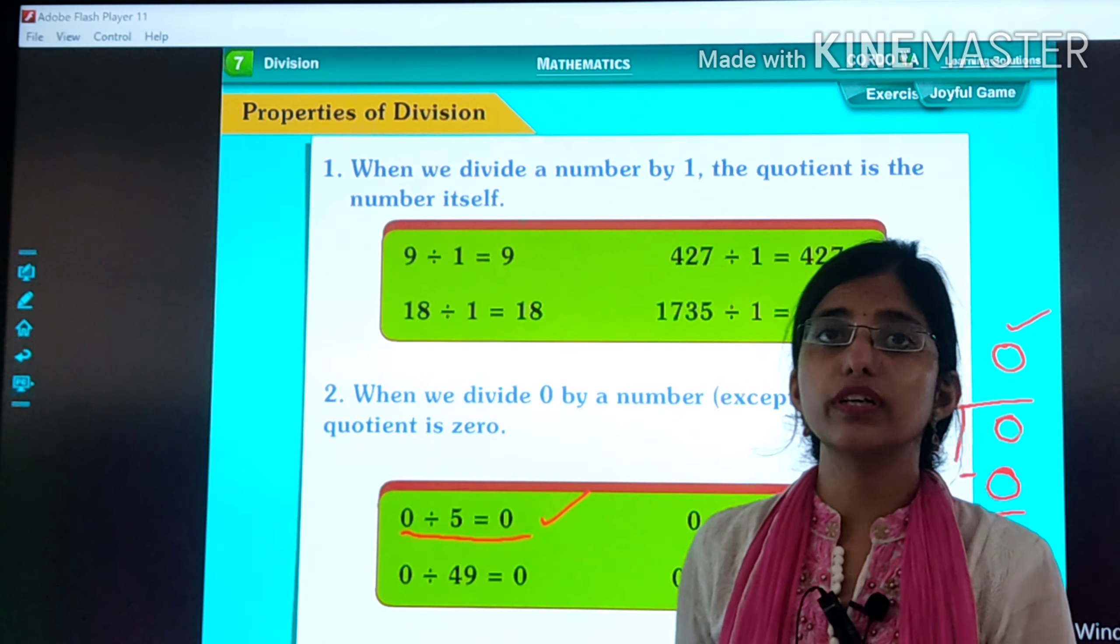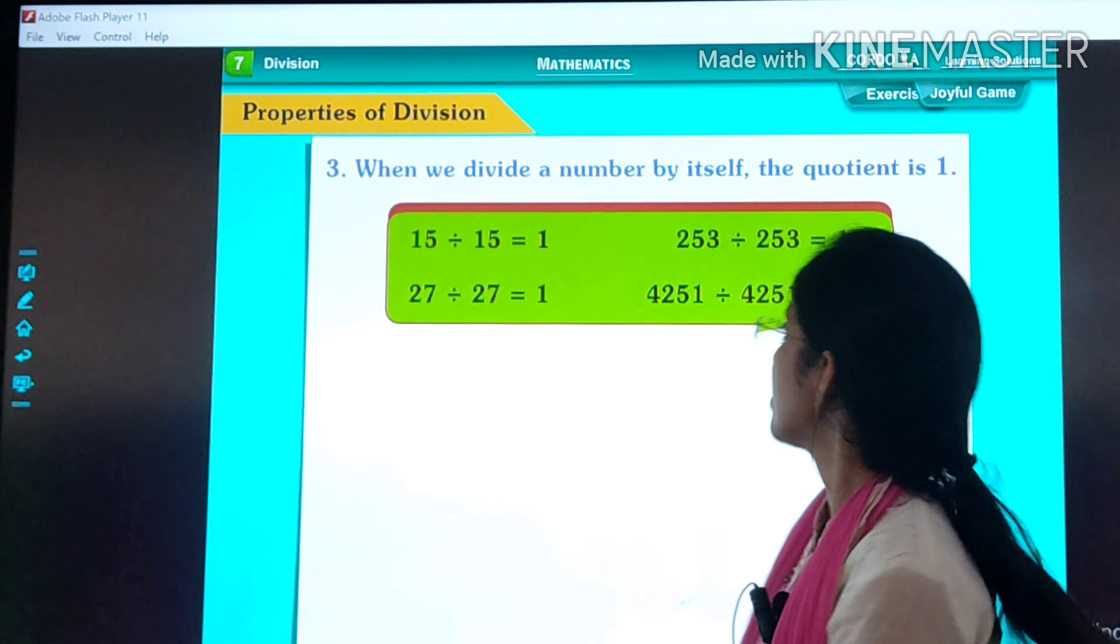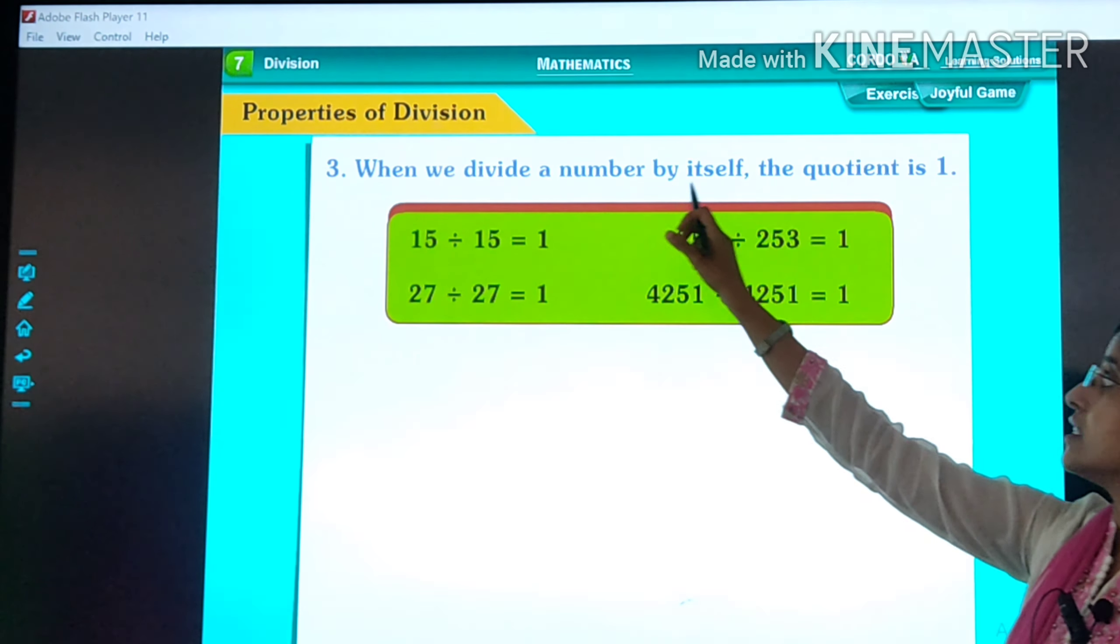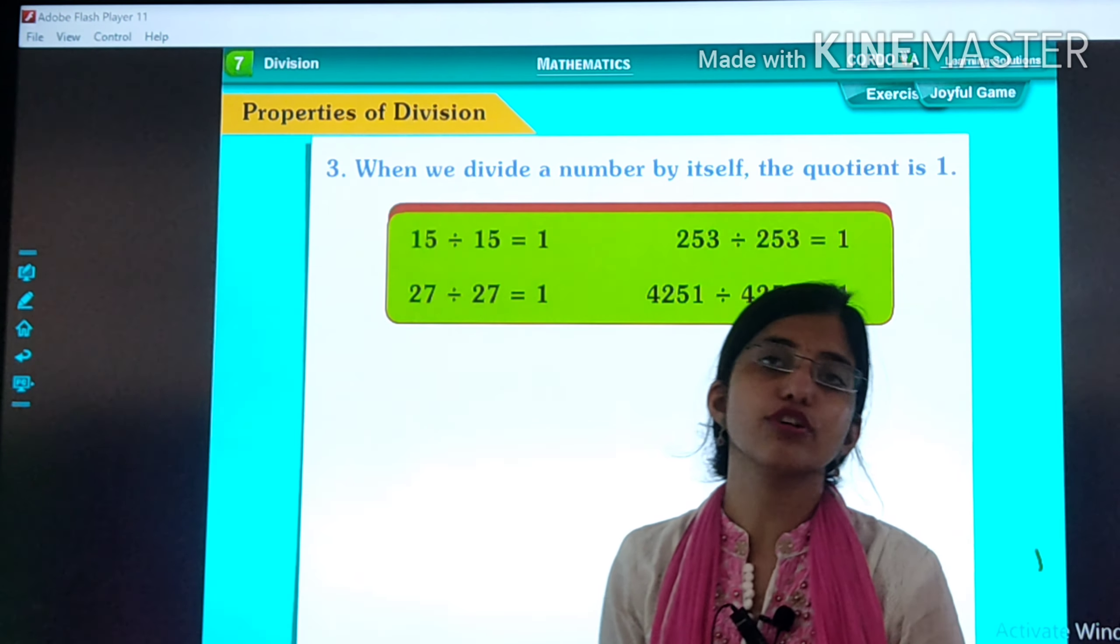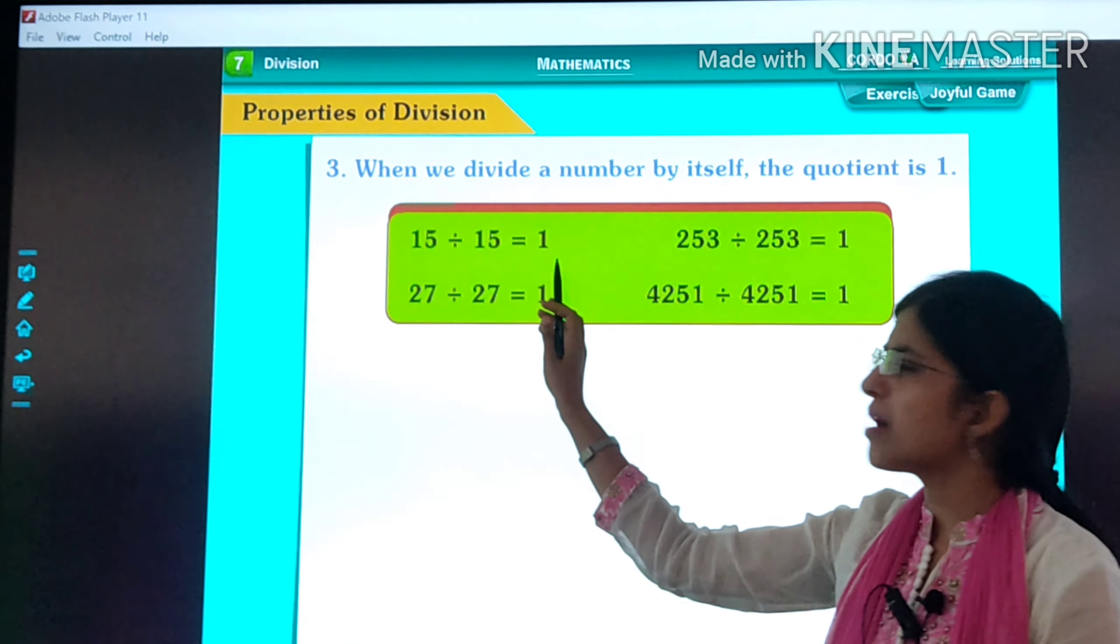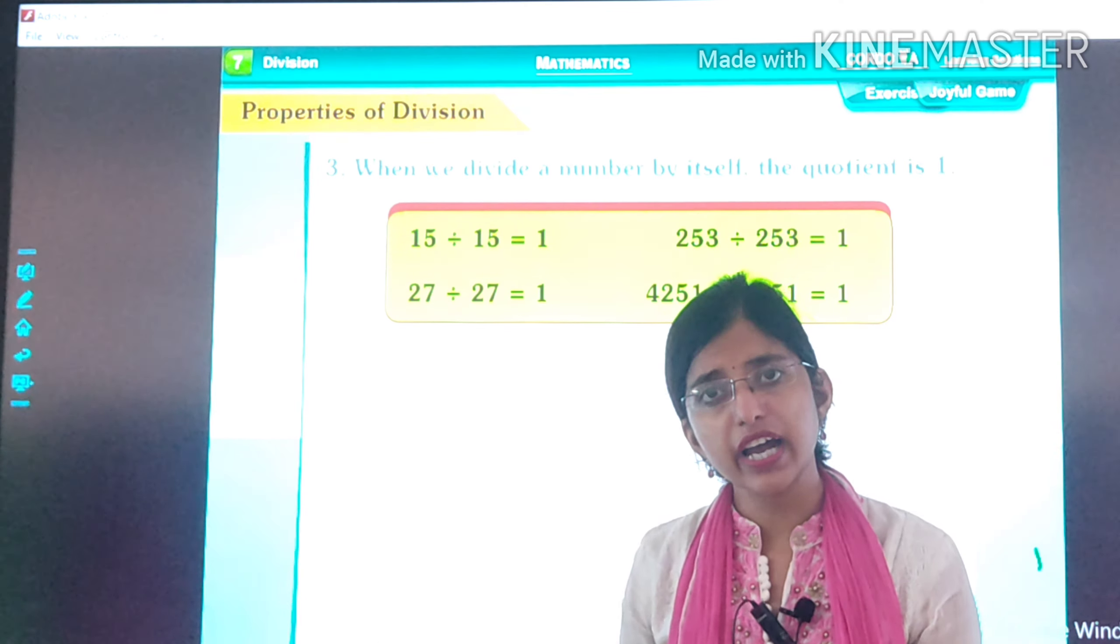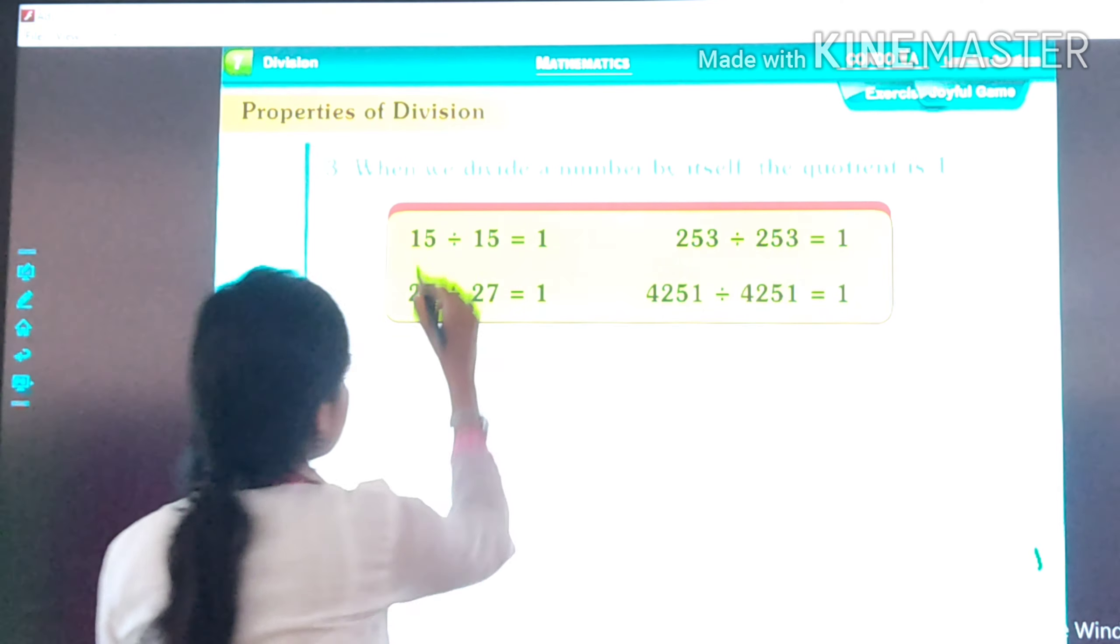Now we will move towards our next property. Now our third property: When we divide a number by itself, the quotient is 1. Very simple. 15 divided by 15 is 1. 27 divided by 27 is 1. Why? Let's see the first example.